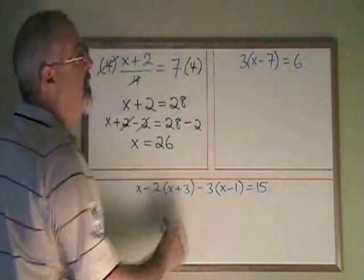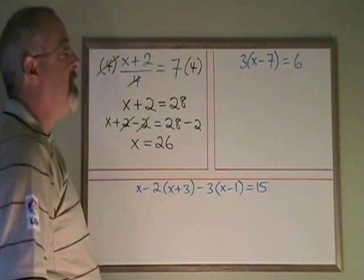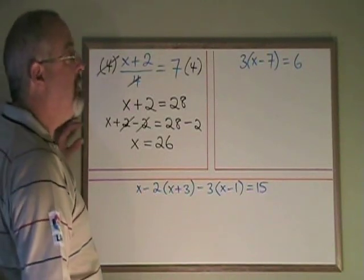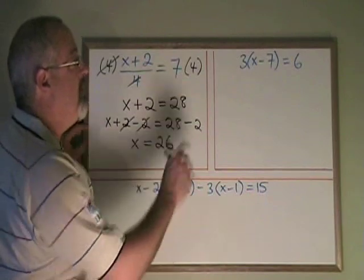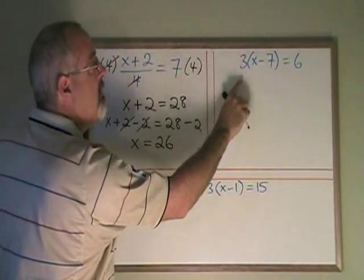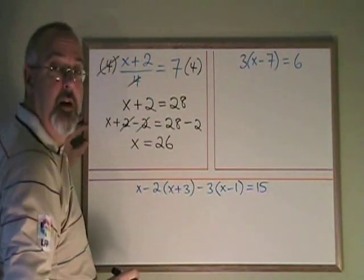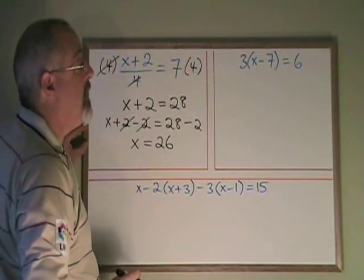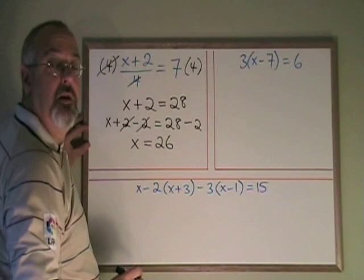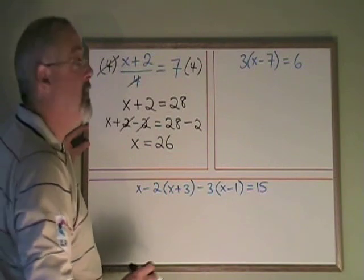Here we have an equation that has a bracket, and the bracket is being multiplied by a 3. We have to know how to deal with this bracket. What we have to do is realize that this 3 is being multiplied by everything that's inside of the bracket. So we can get rid of the bracket by multiplying the 3 by each of the terms inside the bracket one at a time.